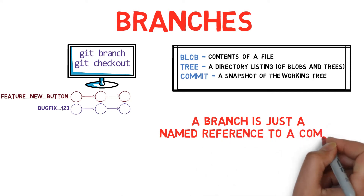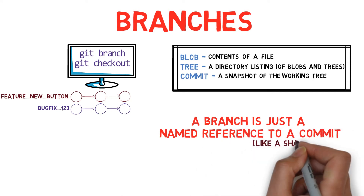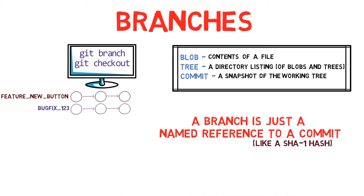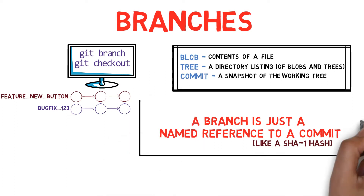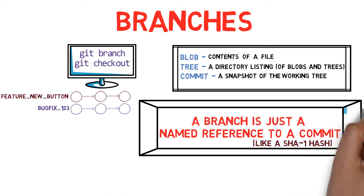We could always reference a commit by its SHA1 hash, but humans usually prefer other forms to name objects. A branch is one way to reference a commit, but it's really just that.